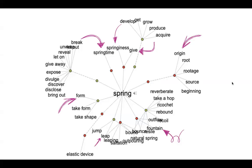AI models also use relationships between words, but instead of dictionary definitions, they establish relationships by examining patterns of use across vast amounts of data. Then they assign probabilities or weights to these relationships. It's kind of similar to what you're looking at here, where the word form is closer to spring than the word elastic device, which is further away.